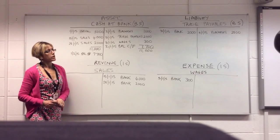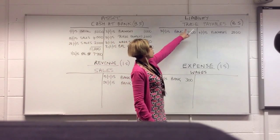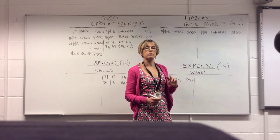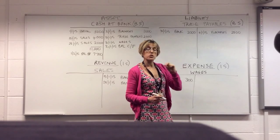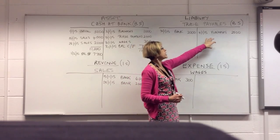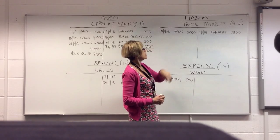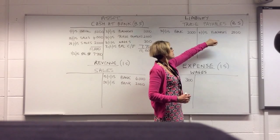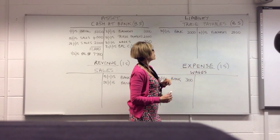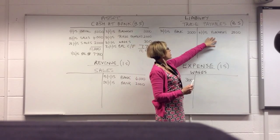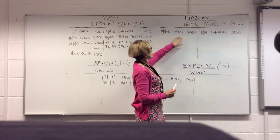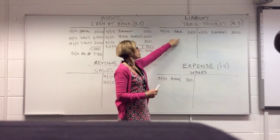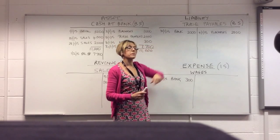That's our cash at bank account balanced off at the end of January, with a balance brought forward for the start of the next accounting period. Now for liability accounts — I've got trade payables here. A liability account is balanced off in a similar way, but liability accounts normally have credit balances — more credits than debits. In this account I've obviously bought some inventory or stock worth 2,500 pounds on credit, but I also paid off some suppliers, which is a payment on the debit side.